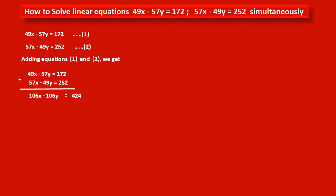Therefore, dividing both sides by the common factor 106, we get: x - y = 424/106, that is 4. We consider this as equation 3.